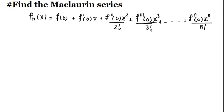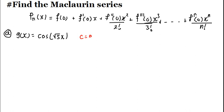The first example we're going to look at, let's call it A. Let's say it's a function G of X equals to cos(√5·X). Since we are talking about the Maclaurin series, you should always remember that C equals zero — it's centered at zero. So I'm going to differentiate as far as I can go.